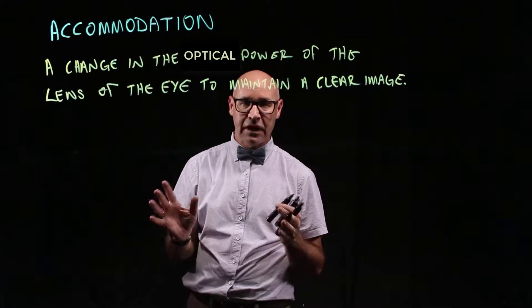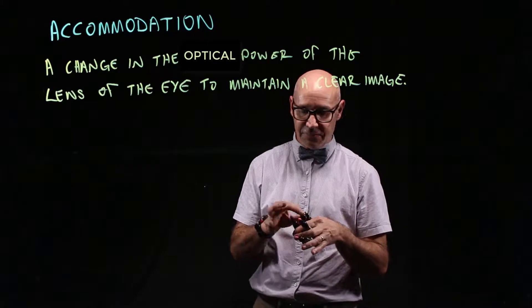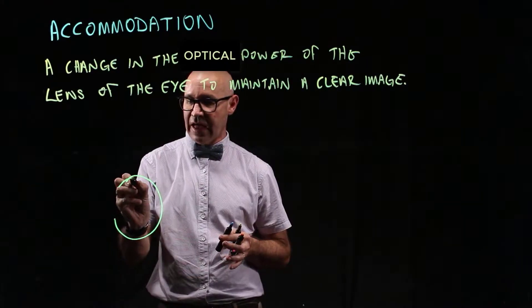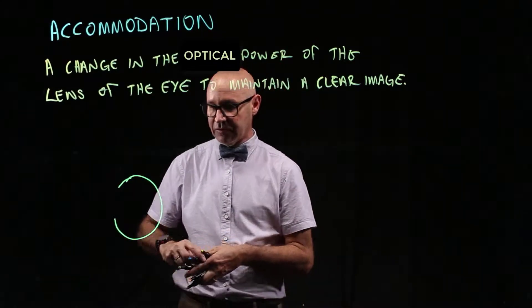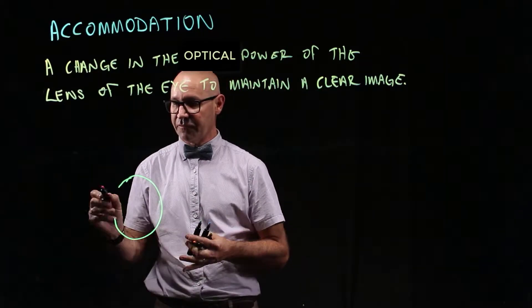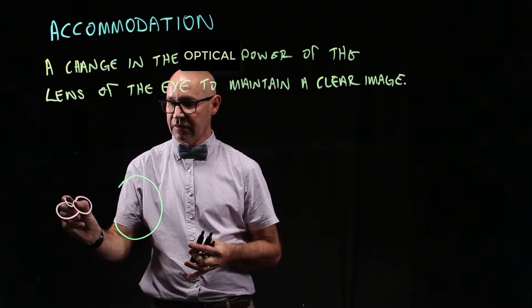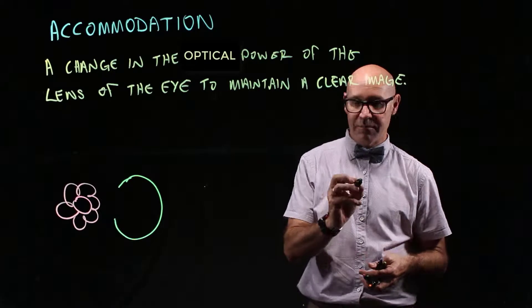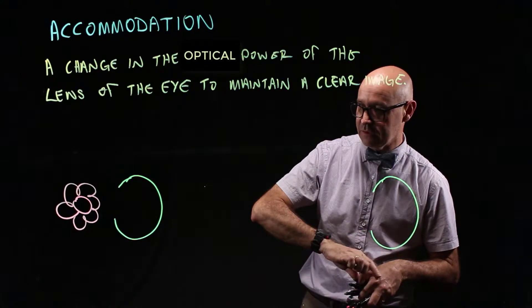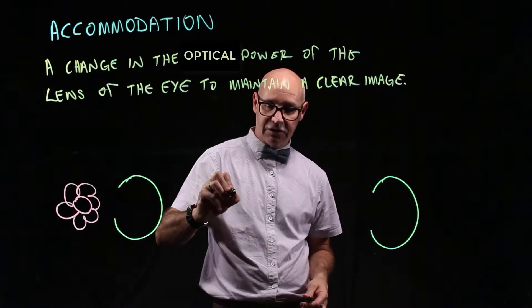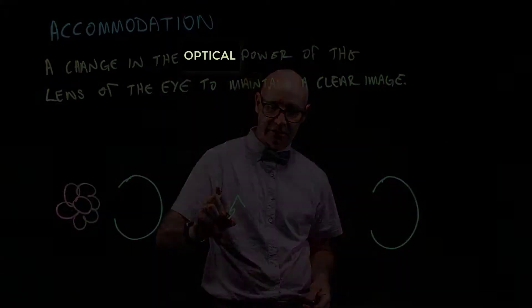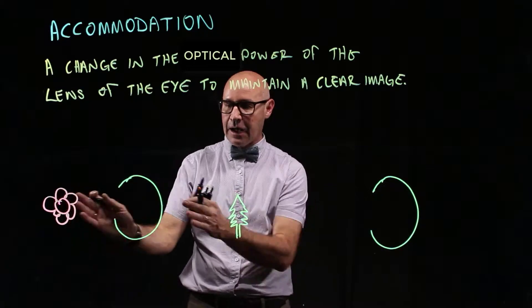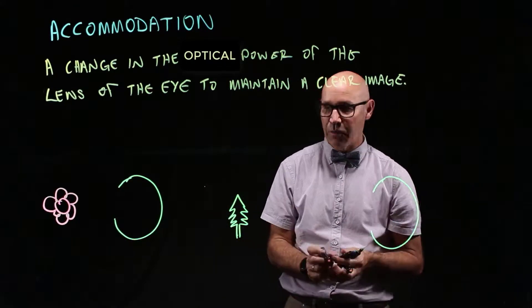So there are two scenarios: looking at something that's up close and something that's far away. We need to draw the eyeballs — that's the eyeball without the lens. We're going to look at a flower that's up close, and then draw another eyeball looking at a tree that's far away in the distance. Here are the two scenarios: a flower up close and a tree a long way away.